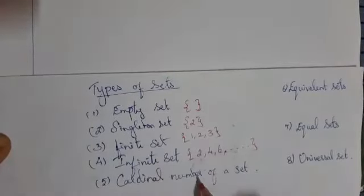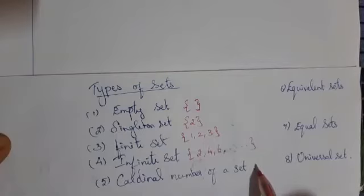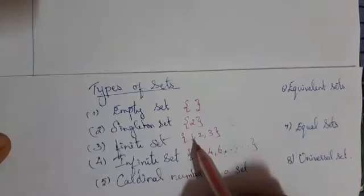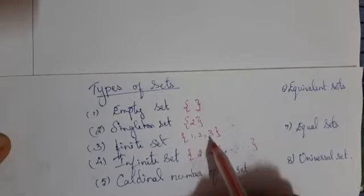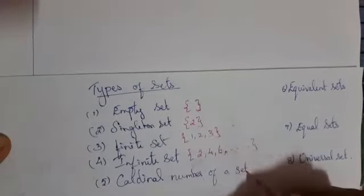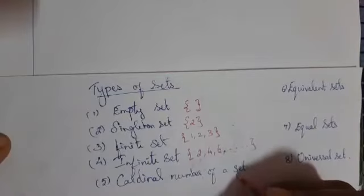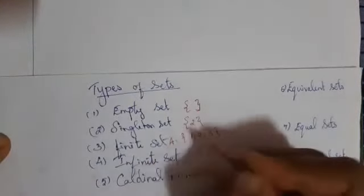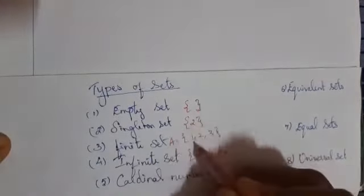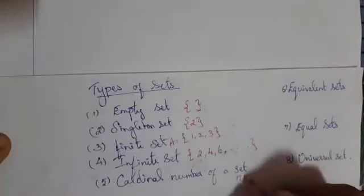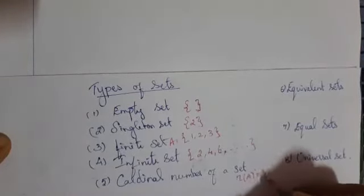What is the meaning for cardinal number of a set? You have to take the finite set and count the elements — one, two, three. Therefore, how many elements are there? Three elements. That is the cardinal number. If you take the finite set as A, that is one, two, three, then the cardinal number of set A, N of A, is equal to three.